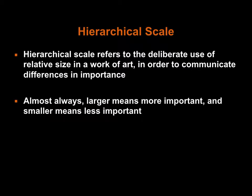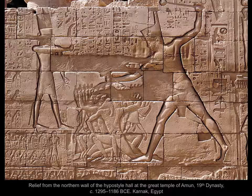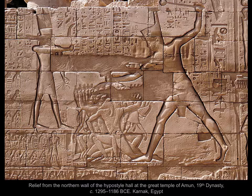Another important type of scale is called hierarchical scale. This term describes the utilization of scale to denote importance by making the most important element the largest-sized element in the image. In this carved relief scene from the great temple at Amun in Egypt, the figures are created in a variety of sizes. Rather than using size to communicate depth and illusionistic space, the sizes of the figures show their importance in relationship to each other. Through hierarchical scale, the large figure on the right is likely the most significant, with the smaller figures in the center and left being less significant in comparison.